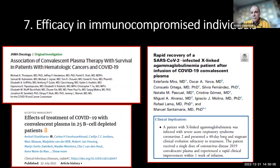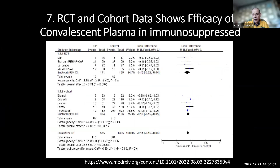Then came the experiments of nature — immunocompromised patients. This began as a case series. Early work by Michael Thompson and Jeff Henderson at WashU showed very early that these patients often didn't mount antibodies, and if you gave them plasma, you gave them replacement therapy. There is now randomized controlled trial data as well as cohort data, and all points show patient benefit. Today, convalescent plasma is the only antibody-based therapy available in the United States.